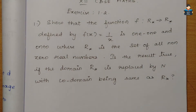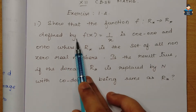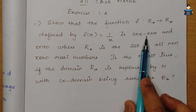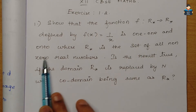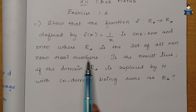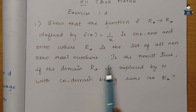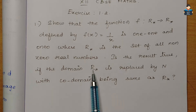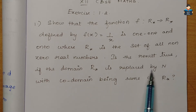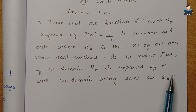Hello everyone, welcome to our channel. In this video, Class 12 standard NCERT Math, Chapter 1 Relations and Functions, Exercise 1.2, first question: show that the function f: R* to R* defined by f(x) = 1/x is one-to-one and onto. We need to prove both. R* is the set of all non-zero real numbers. Also, is the result true if the domain R* is replaced by N, with co-domain remaining R*?